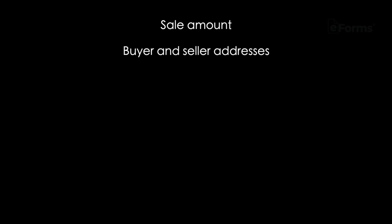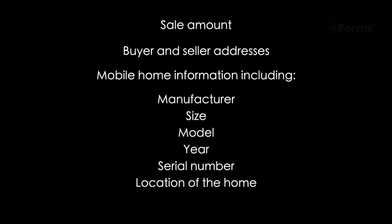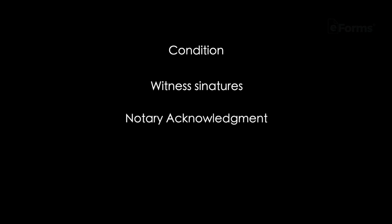Next, let's go over what to include in a mobile home bill of sale. Things to include are sale amount, buyer and seller addresses, mobile home information including manufacturer, size, model, year, serial number, location of the home, condition, witness signatures, and notary acknowledgement. While a notary may not be required in your state, it's best to get a large transaction like a mobile home bill of sale notarized.